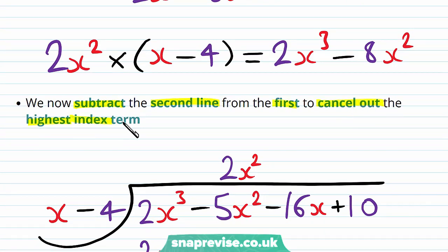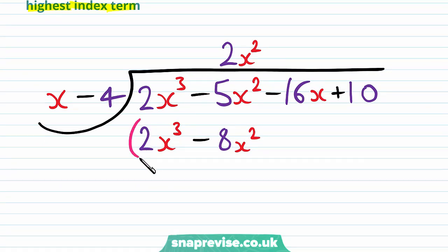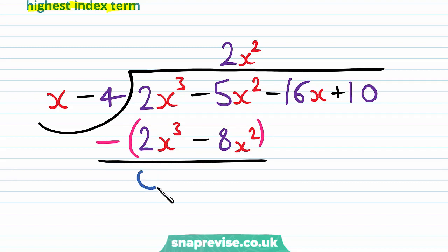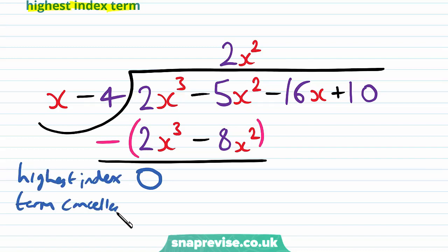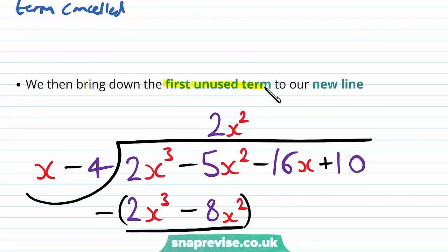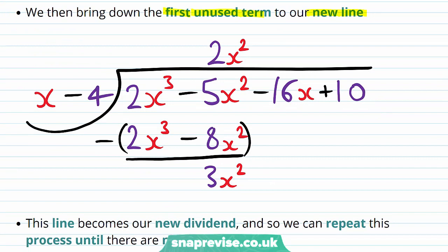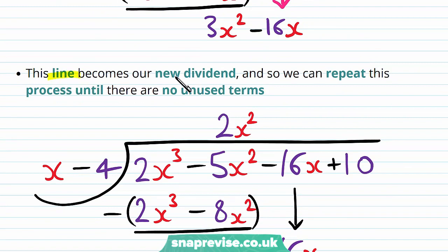We now subtract the second line from the first to cancel out the highest index term. This gives us 0 for the x³ terms — i.e. the highest index term has cancelled out. Then we have −5x² minus (−8x²), which gives us +3x². We then bring down the first unused term to our new line. The first unused term is the −16x, so we get −16x on our new line. This new line becomes our new dividend, and so we can repeat this process until there are no unused terms.